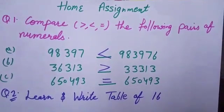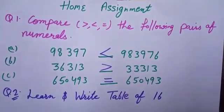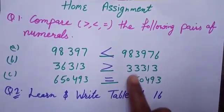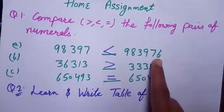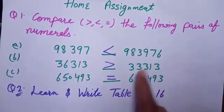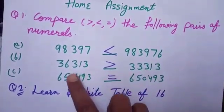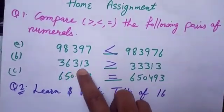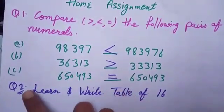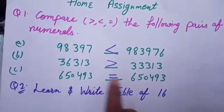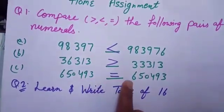Question number 1: Compare the following pairs of numerals. In part A, 983,976 is greater. In part B, 36,313 is greater. In part C, both numerals are equal.